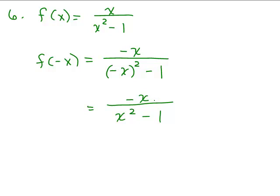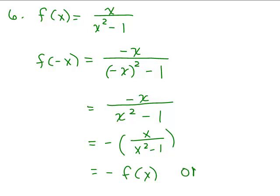But is it the opposite of it? If you factor out a minus sign, you have negative times x over x squared minus 1 — and it is the opposite of f of x. So this is an odd function, and it's symmetric with the origin.